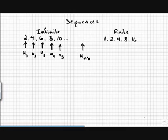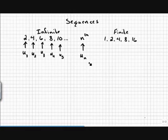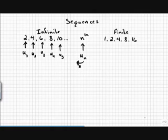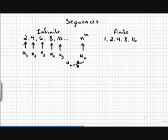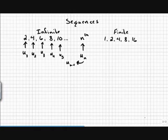For any term further down, we call it u_n — the nth term. So the 50th term would be u₅₀, and the 60th term would be u₆₀. Importantly, if u_n is the nth term, then the term right before it is u_{n-1}. For example, the term before u₅₀ is u₄₉, and before u₆₀ is u₅₉. This is very important when we talk about recursive sequences.